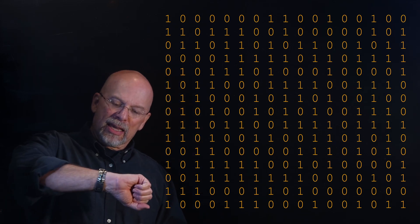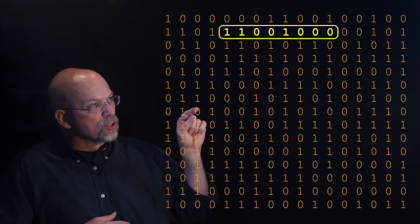What I could do is just have this list, take a look at maybe what time it is. The second hand is at 21 seconds, so I go down to the 21st position, grab the next 8 bits, 11001000, there you go. There's a random number.